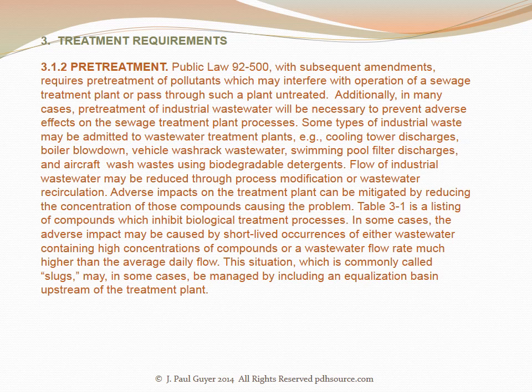Some types of industrial waste may be admitted to wastewater treatment plants — for example, cooling tower discharges, boiler blow down, vehicle wash rack wastewater, swimming pool filter discharges, and aircraft wash wastes using biodegradable detergents. Flow of industrial wastewater may be reduced through process modification or wastewater recirculation. Adverse impacts on the treatment plant may be mitigated by reducing the concentration of those compounds causing the problem. Table 3-1 is a listing of compounds which inhibit biological treatment processes. In some cases, the adverse impact may be caused by short-lived occurrences of wastewater containing high concentrations of compounds or a wastewater flow rate much higher than the average daily flow. This situation, commonly called slugs, may in some cases be managed by including an equalization basin upstream of the treatment plant.